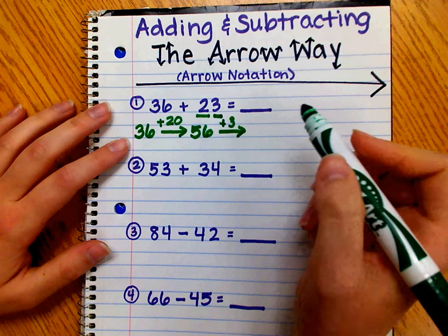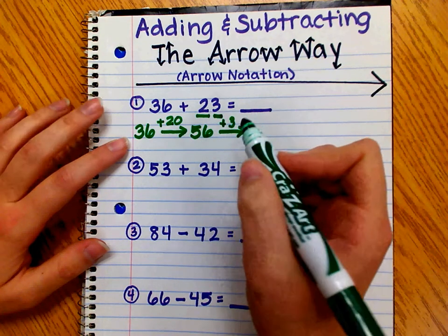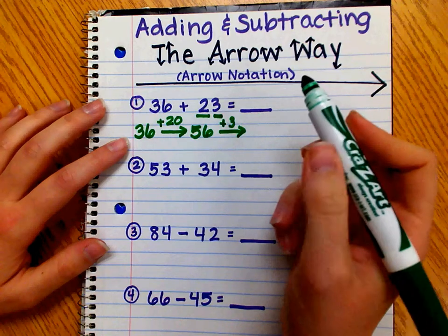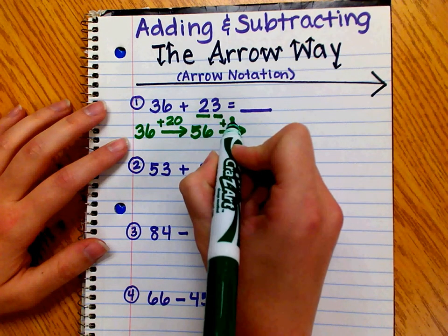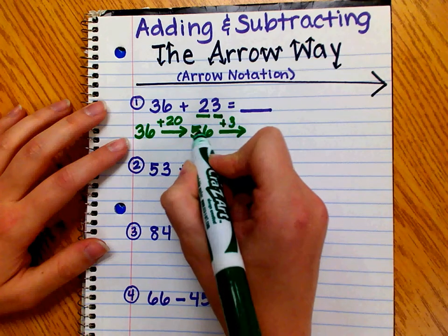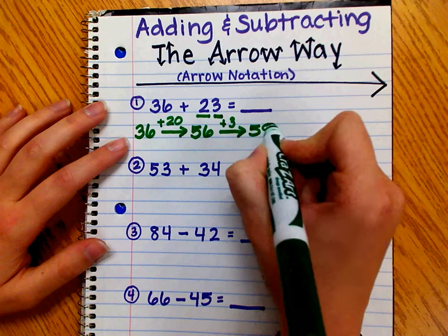I like to push my students to use the place value knowledge. That way, they're not constantly relying on the hundreds chart, which they might not always have with them. 6 ones plus 3 ones equals 9 ones. We didn't add any tens this time, so we have 5 tens and 9 ones.